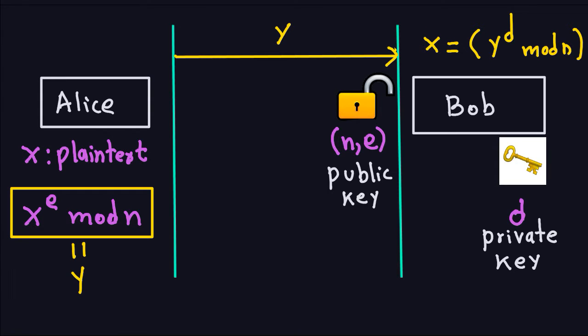You might be wondering: why do I get back X? That's exactly what I mean by why this works — why when Bob takes this power and takes the modulo N, why does this work? What I'm going to do now is a proof of exactly what that means: why I get back X when I do this computation.